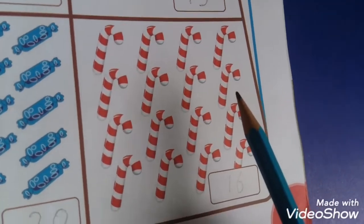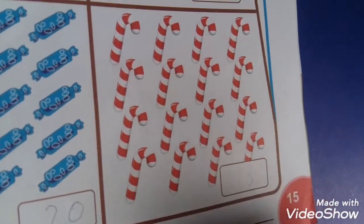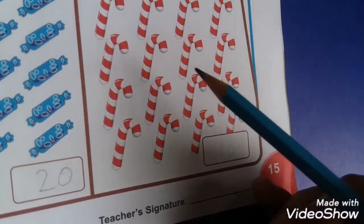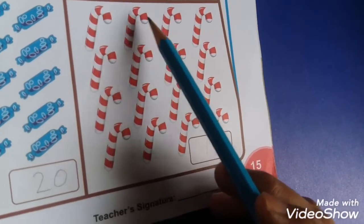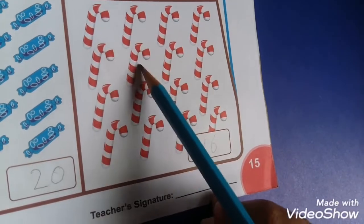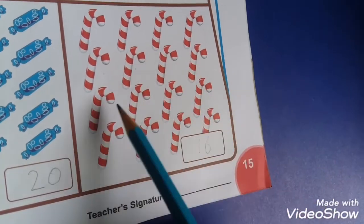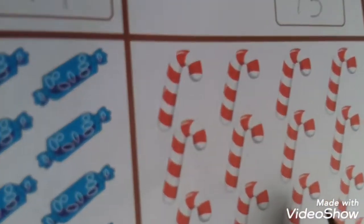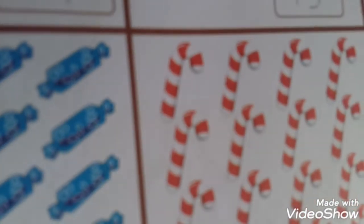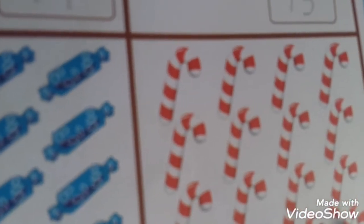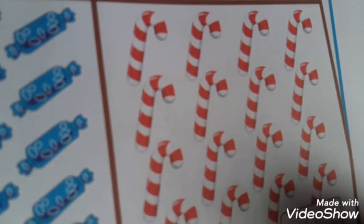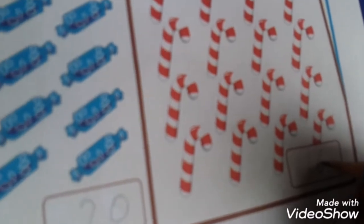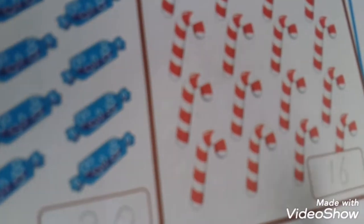These are also sweets, but the shape of the sweets is different. Count them: one, two, three, four, five, six, seven, eight, nine, ten, eleven, twelve, thirteen, fourteen, fifteen, and sixteen. Write in the box: one, six - 16.